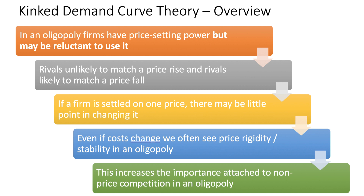In summary, oligopoly firms have price-setting power but may be reluctant to use it: rivals are unlikely to match a price rise and likely to follow a price fall. If a firm has settled on one price, there may be little commercial reason to change it even if costs change, and the kinked demand curve suggests firms will not engage in long-term price reductions — focusing their energies instead on non-price competition.